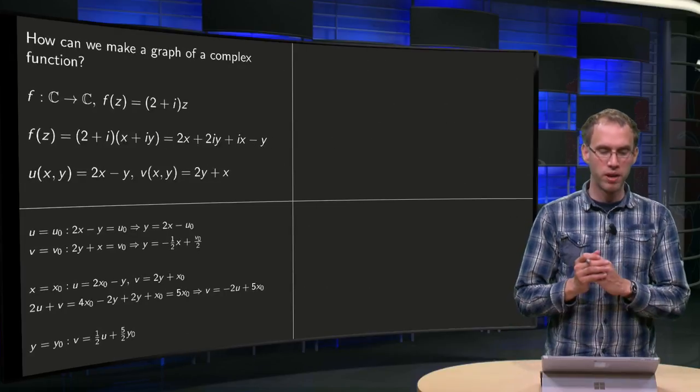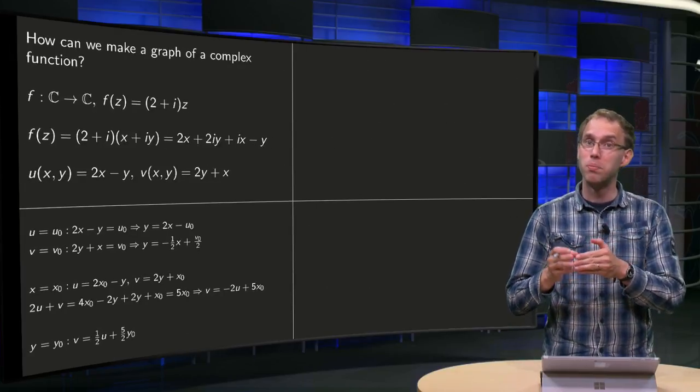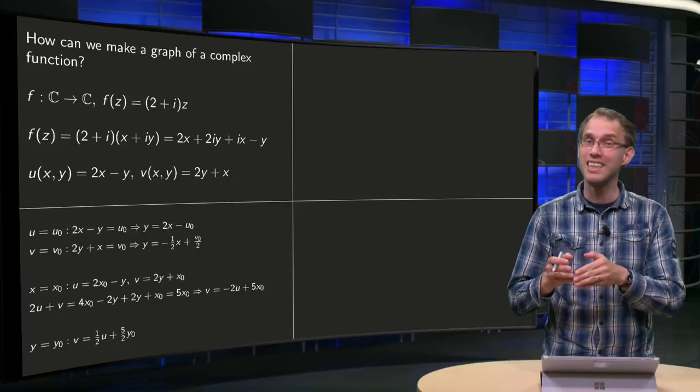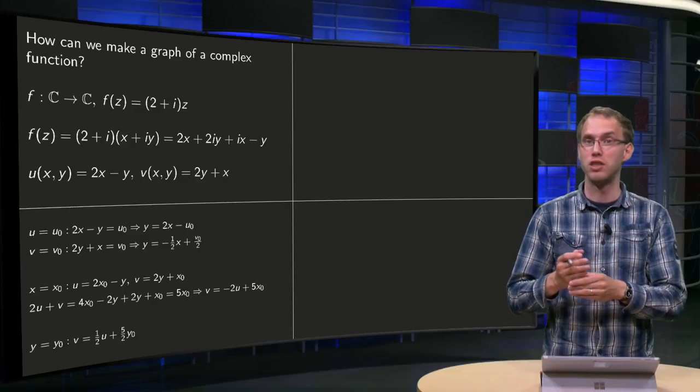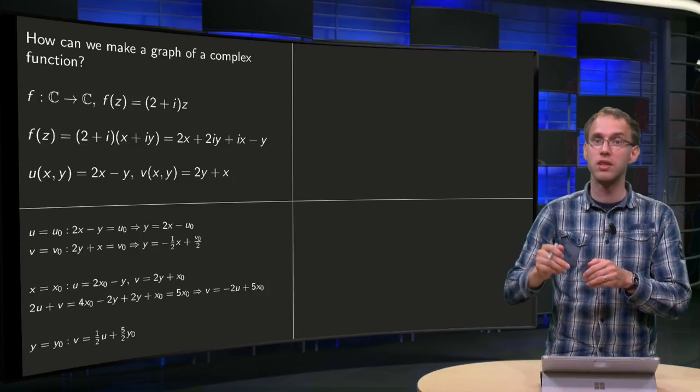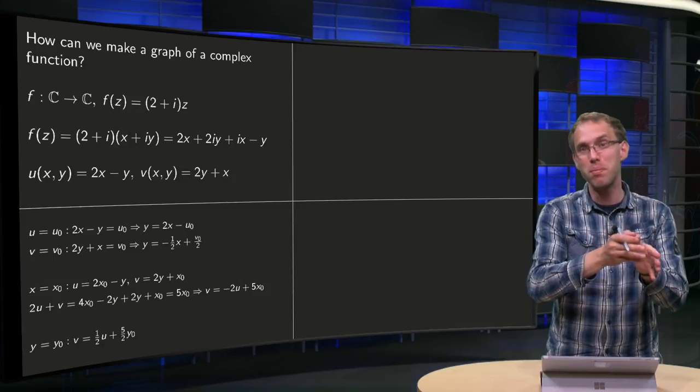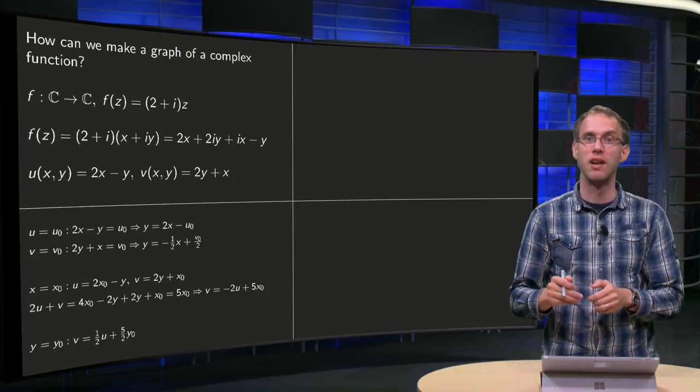So what can we do? First of all we can look what happens with the pre-image of lines in the uv plane. So we look in the plane where u is constant, and we see which curves in the xy plane are mapped to curves where u is constant.